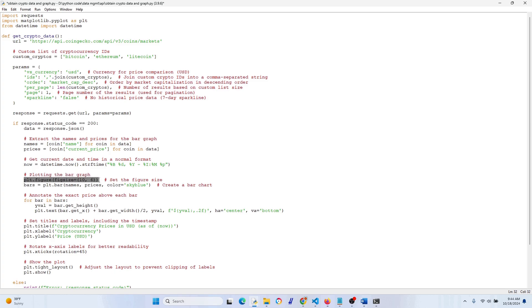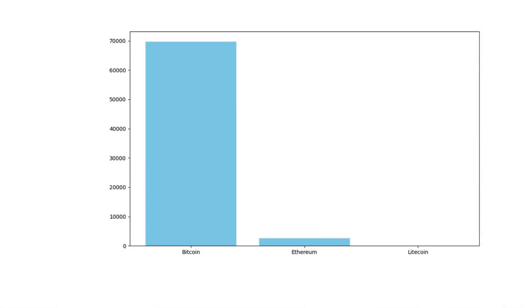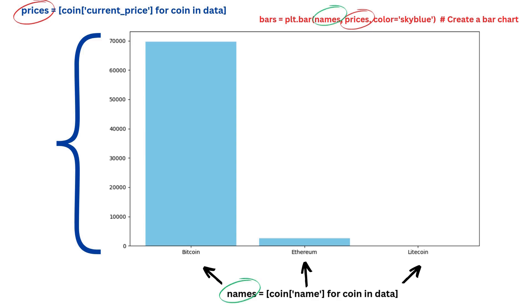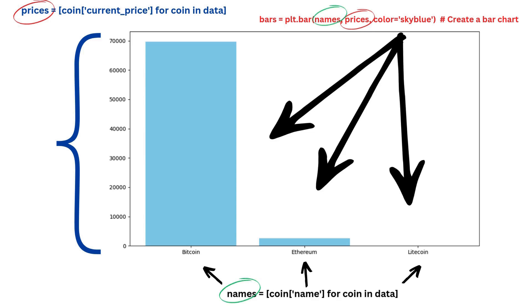Now we actually start plotting the bar graph. We set the figure size — you can play around with this; I found something that works well for three cryptocurrencies. We pass in those names and prices, and I'm using sky blue for the bar color — you can use different colors if you want. Looking at the code snippets, you can see the connection between the list of crypto names, the prices gathered from the API, and how they feed into the bar chart definition.